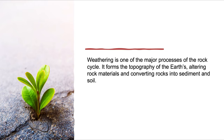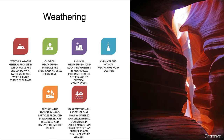Weathering is one of the major processes of the rock cycle. It forms the topography of the earth, altering rock materials and converting rocks into sediment and soil. Weathering is defined as the general process by which rocks are broken down at the earth's surface. Weathering is driven by climate, and we can divide it into two categories: chemical weathering and physical weathering.